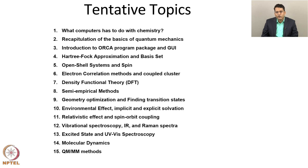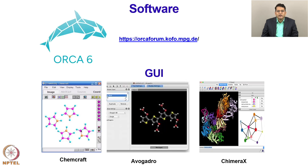In this course, we are going to learn about the theories of the methods as well as perform hands-on calculations. For the hands-on calculations, we are going to use the software package ORCA. For the graphical user interface, we are going to use three tools: Chemcraft, Avogadro, and Chimera-X.